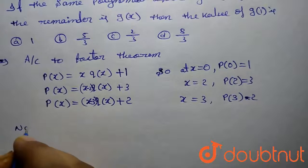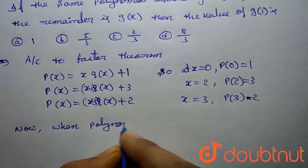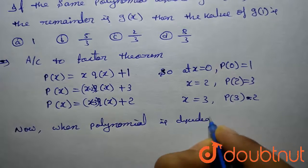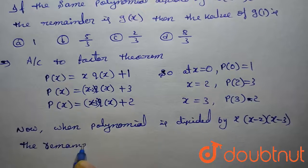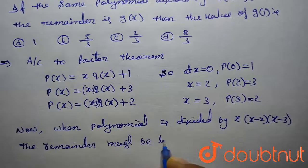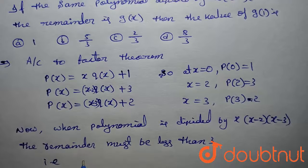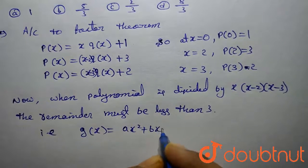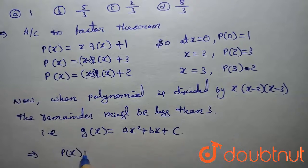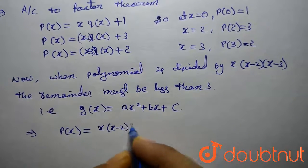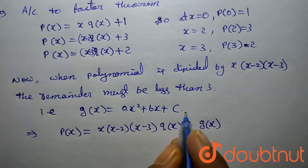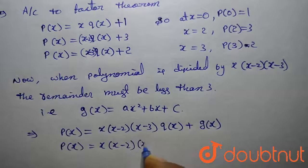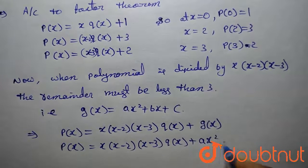Now, when the polynomial is divided by x(x−2)(x−3), the remainder must be of degree less than 3, so g(x) = ax² + bx + c. This implies p(x) can be written as x(x−2)(x−3)·q(x) + g(x), that is p(x) = x(x−2)(x−3)·q(x) + ax² + bx + c.